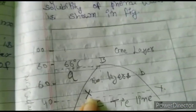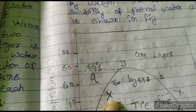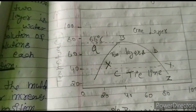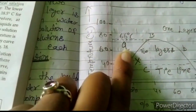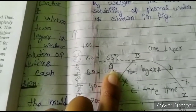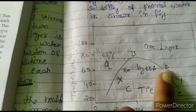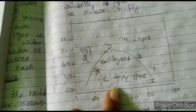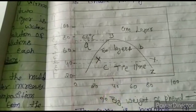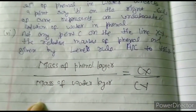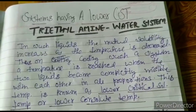Point X represents the composition of phenol in water, and point Y represents the composition of water in phenol. The line XY is called a tie line. For any temperature below 66 degrees Celsius, a point A on the left side of the curve represents an unsaturated solution of phenol in water, whereas point C on the right side represents an unsaturated solution of water in phenol. At any point on the tie line XY, the relative masses are given by the lever rule: mass of the phenol layer divided by mass of the water layer equals CX divided by CY.